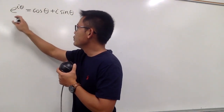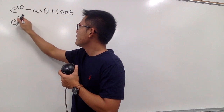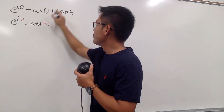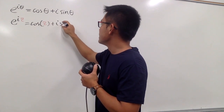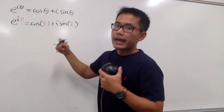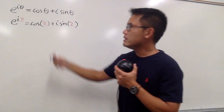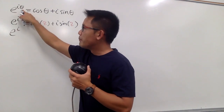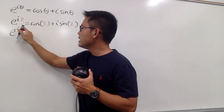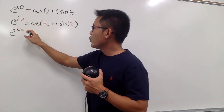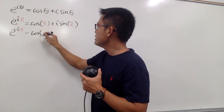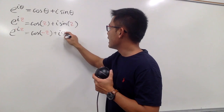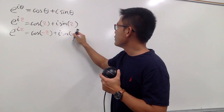First, let me plug in z into all the theta, so we will have e to the iz, and this is equal to cosine z plus i sine z. Next, I will plug in negative z into all the theta, so we will have e to the i times negative z, equal to cosine of negative z plus i sine of negative z.